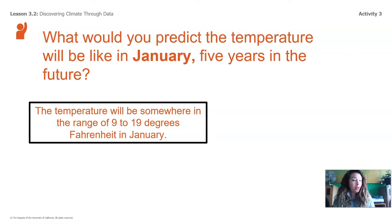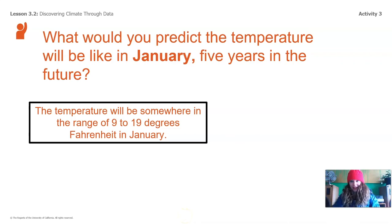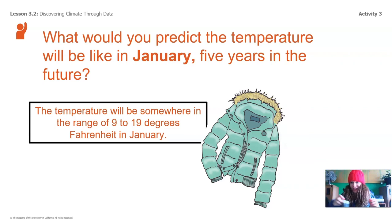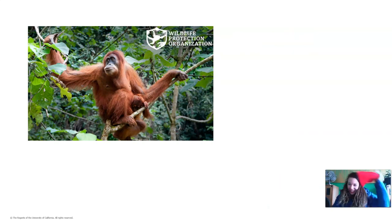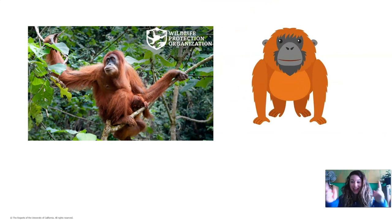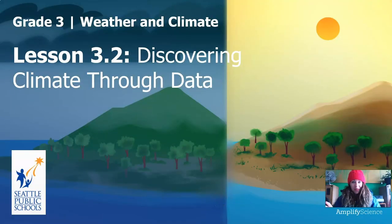That is really cold! Sounds like I better pack my parka. It's going to be really cold on my trip to Anchorage — I've got my heavy coat, my hat, and even my little gloves. I am ready for nine to 19 degrees. Now, remember, we're ultimately trying to figure out where to put our orangutan reserve, and I think that studying many years of weather data is going to help us find the best island to put our reserve. So that's it for Lesson 3.2, Discovering Climate Through Data. I'm Scientist Kate, and until I see you next time, be safe and stay curious.